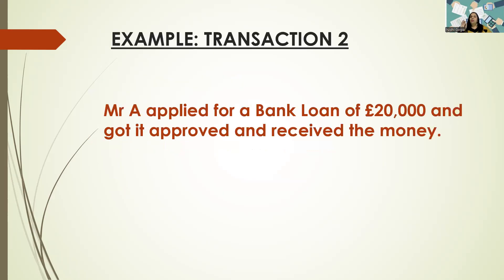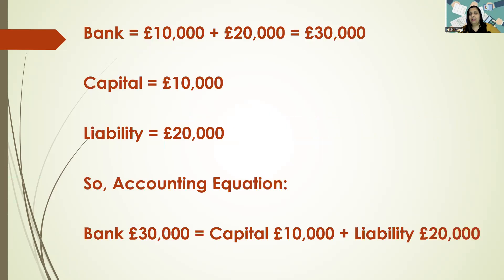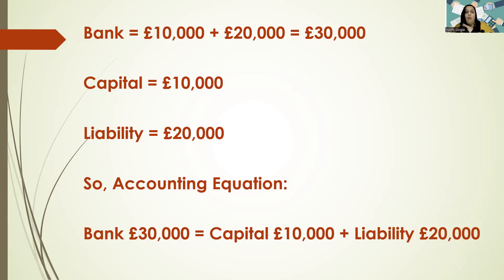Transaction two: Mr. A applied for a bank loan of £20,000, got it approved, and received the money. When you receive the money, it's a liability — so liability goes up by £20,000. Your bank account also goes up by £20,000. The bank had £10,000 before from capital, plus £20,000 extra, so total bank is now £30,000. Capital remains £10,000. Liability is the loan of £20,000. Accounting equation: bank £30,000 equals capital £10,000 plus liability £20,000 — total is 30,000 each side. It balances.